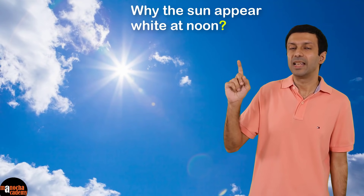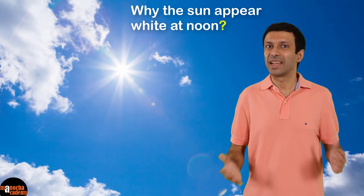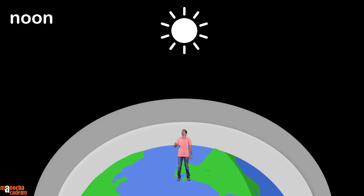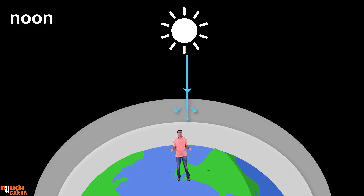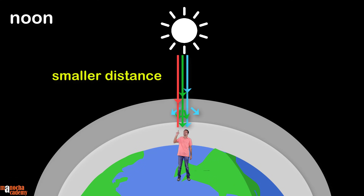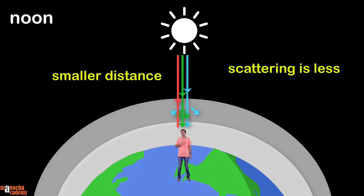Why does the sun appear white to us at noon? At noon, sunlight has to travel through a much smaller distance in the atmosphere. Again, blue is scattered the most and red the least, but since the distance traveled is much smaller, the percentage of blue and green scattered is very small. So all the colors of sunlight reach our eyes, the difference in intensity between colors is small, and that's why the sun appears white at noon.